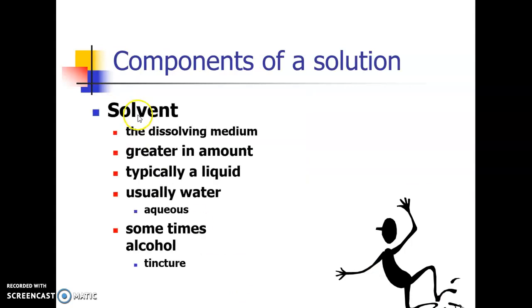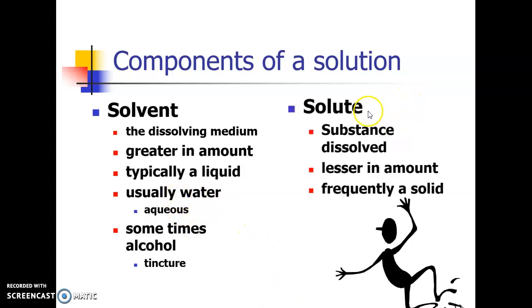Okay so the solvent is the part of the solution that does the dissolving. It's usually present in a greater amount. It's usually liquid and if it's not it could be a gas if you're dissolving another gas. And in chemistry it's usually water. Sometimes we use alcohol. We use the term aqueous to describe solutions that are water-based. Alright so a solute is the substance that is dissolved. It's usually present in a lesser amount than the solvent and it is frequently a solid particularly in chemistry.